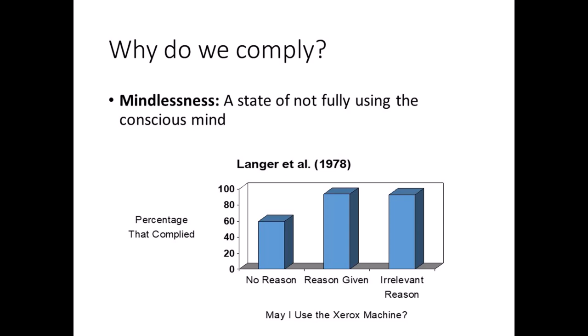In one study, the experimenter approached people using a copying machine and asked to cut in line. When the request was phrased with no reason, 60% of participants complied. When paired with a justifiable reason — 'because I'm in a rush' — 94% complied. And when given an irrelevant reason — 'may I use the copying machine because I have to make some copies' — 93% still complied. The researchers concluded that participants were on automatic pilot, mindlessly responding without fully processing all the words they heard.